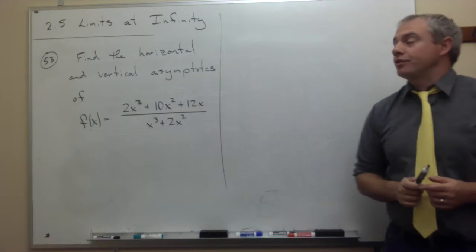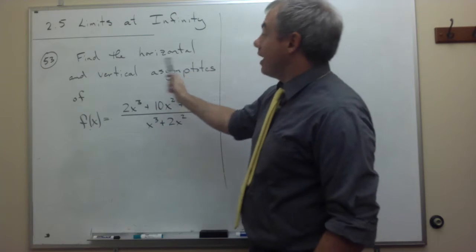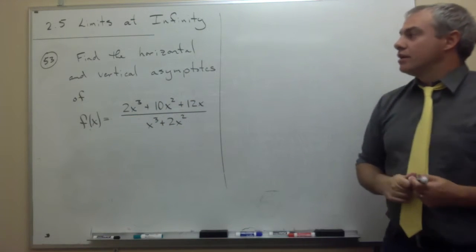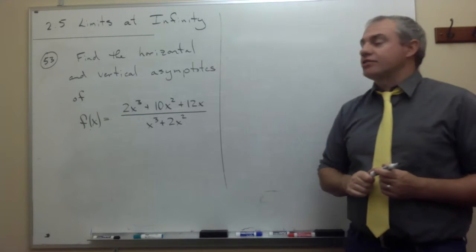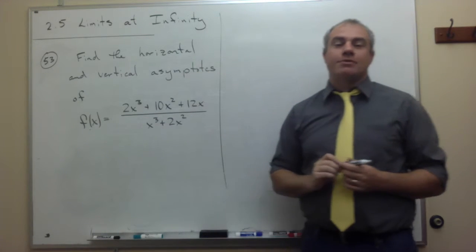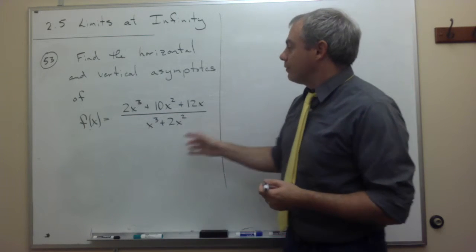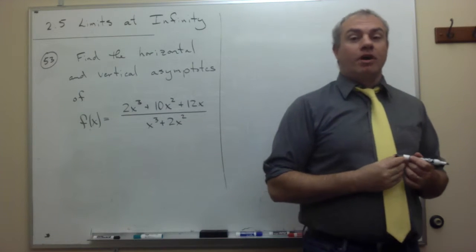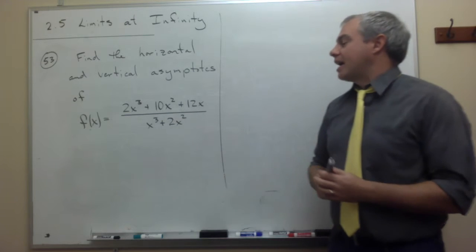In problem number 53, we are asked to find the horizontal and the vertical asymptotes of this function f of x. If you've watched the previous videos from this section, then we're kind of experts now at finding the horizontal asymptotes. So how do we find horizontal asymptotes? Well, typically we take the highest power of x that we find on the top or bottom of the fraction, and we divide the top and the bottom by that highest power.